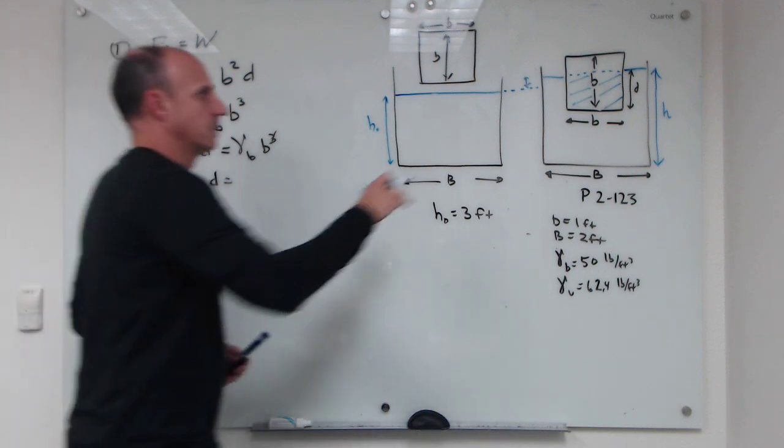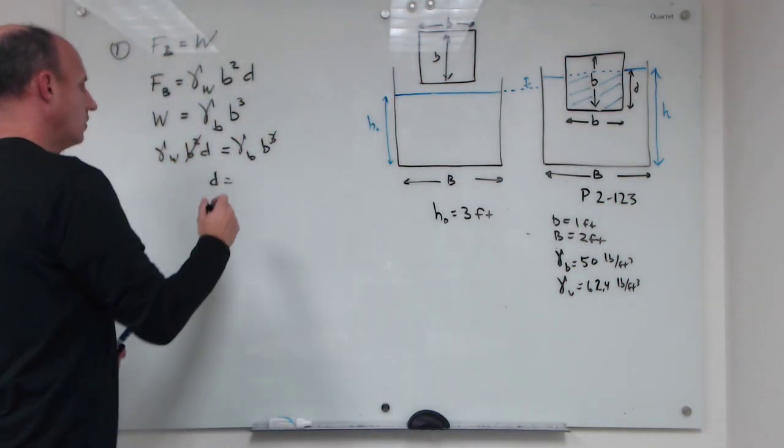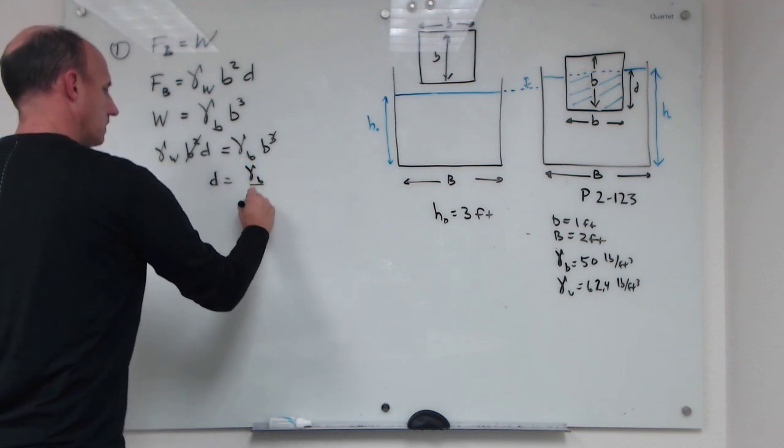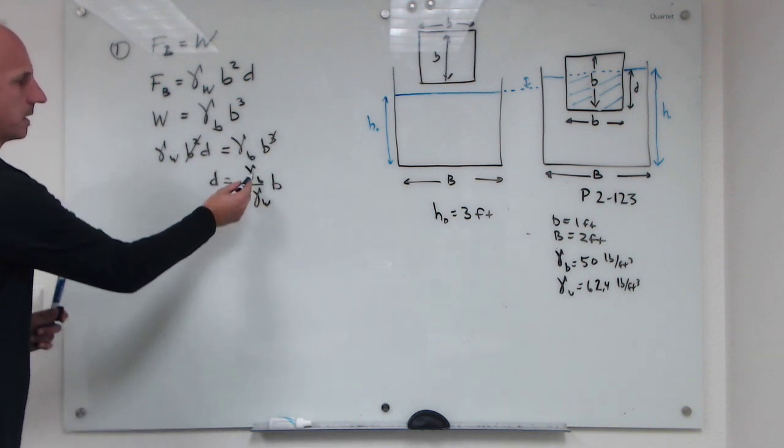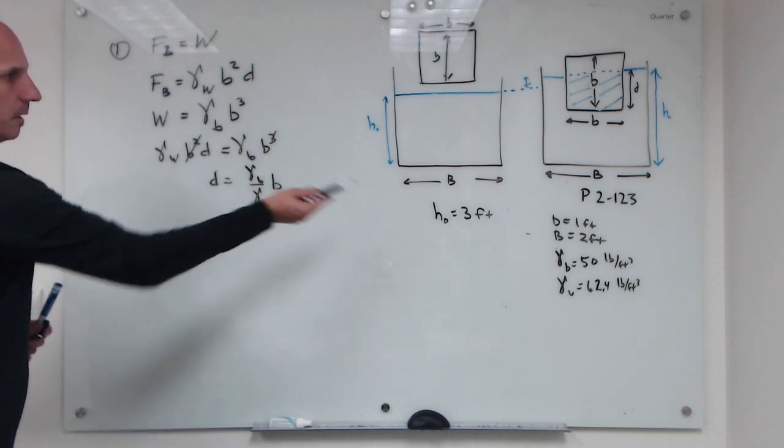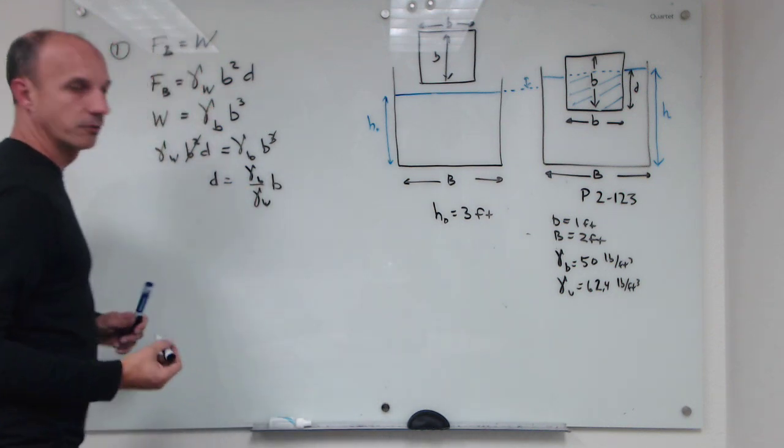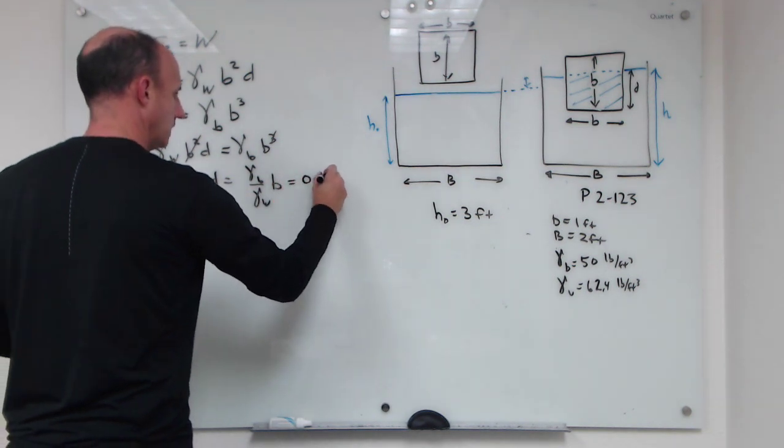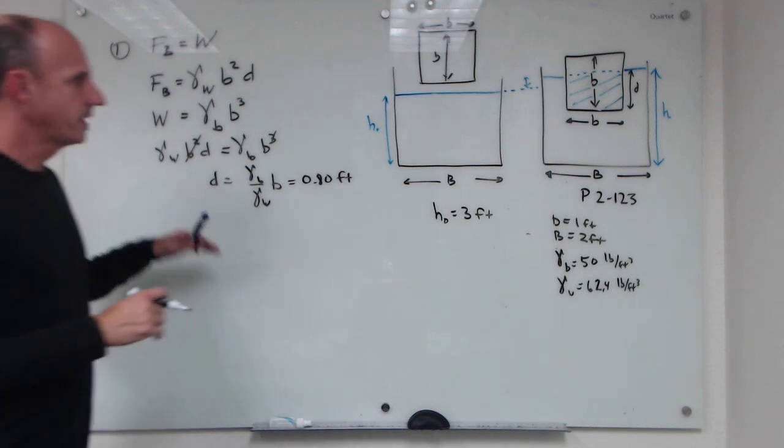The D, which is the depth that this block is going to float in, will be equal to gamma B over gamma W times B. B is one, gamma B is 50 pounds per cubic foot, gamma water is 62.4 pounds per cubic foot, so this works out to be 0.8 feet. Okay, great, so now we know what D is.